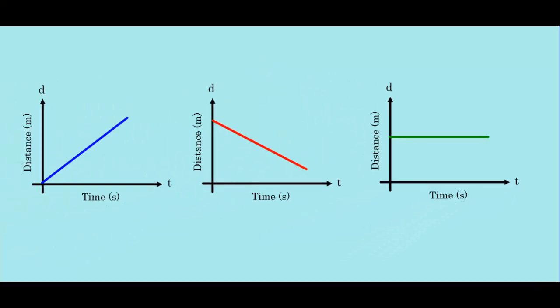So, an upward trend means that we're moving away. A downward trend means that we're coming closer. And a horizontal line would mean that we're staying in the same spot.